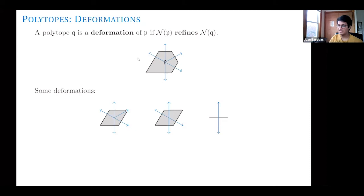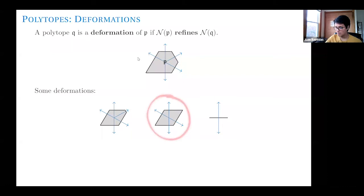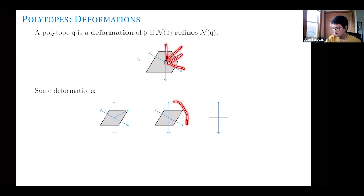If I push the edge further until it becomes a point, the normal fan changes. But this is still a deformation because 'refines' means every cone in the normal fan of this new polytope is the union of some cones in the normal fan of P. The only new cone is this two-dimensional one, which is the union of two two-dimensional cones in the normal fan of P. So this is still a deformation.